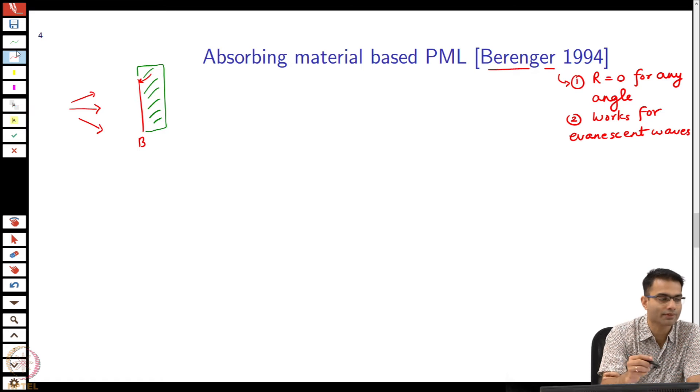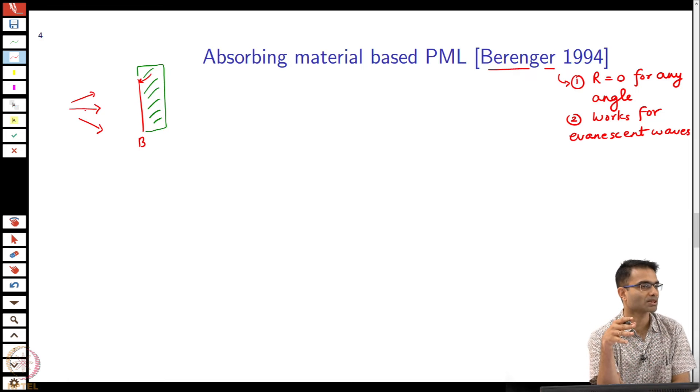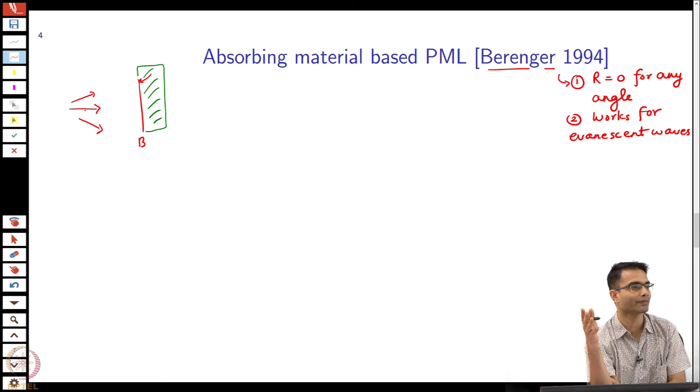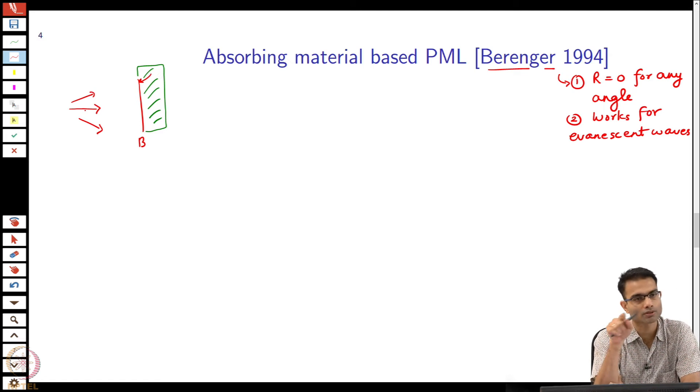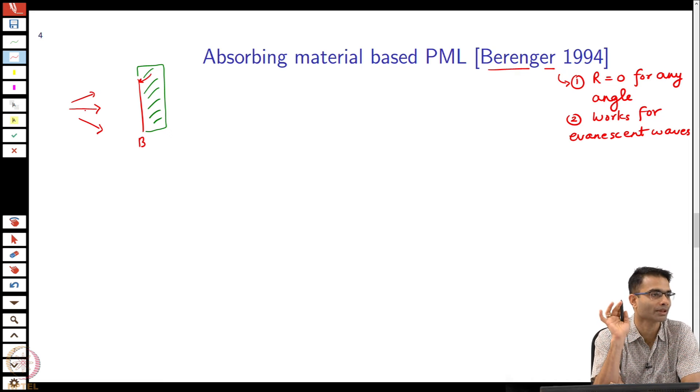If I just put something with a large loss coefficient, will it work? There is a sudden change in refractive index. So even for normal incidence, the reflection coefficient is n minus 1 by n plus 1. Now, if n is anything other than 1, there is a reflection even if it is complex. For a lossy medium, the refractive index n becomes complex - there is going to be a reflection even though the loss is there. So how will you get around this? It does not seem that just pure absorbing material is not going to do it.